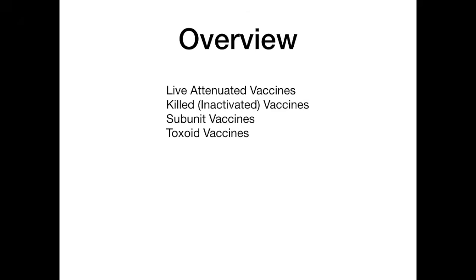The highest yield part of this video is actually the different examples. We'll talk about the different viruses and bacteria that have vaccines in each of these four categories, because on USMLE and Comlex, it's fair game to have to know that information. For example, you need to know that smallpox is a live attenuated vaccine, but that HPV is a subunit vaccine — you have to know what type of vaccine each one actually is.